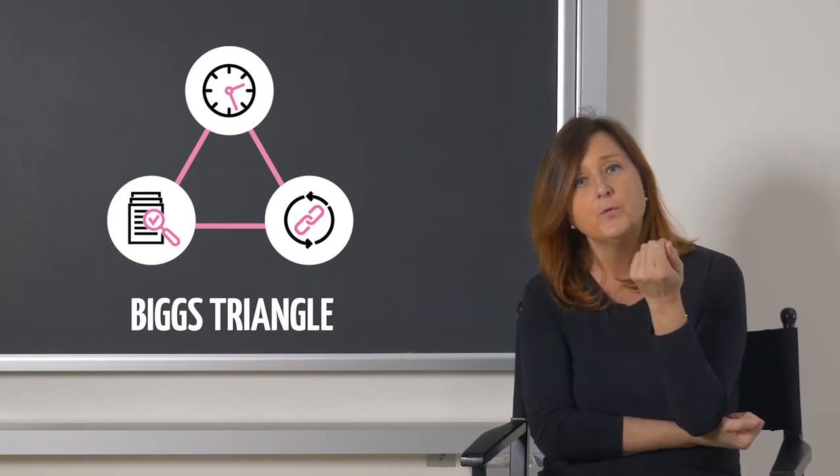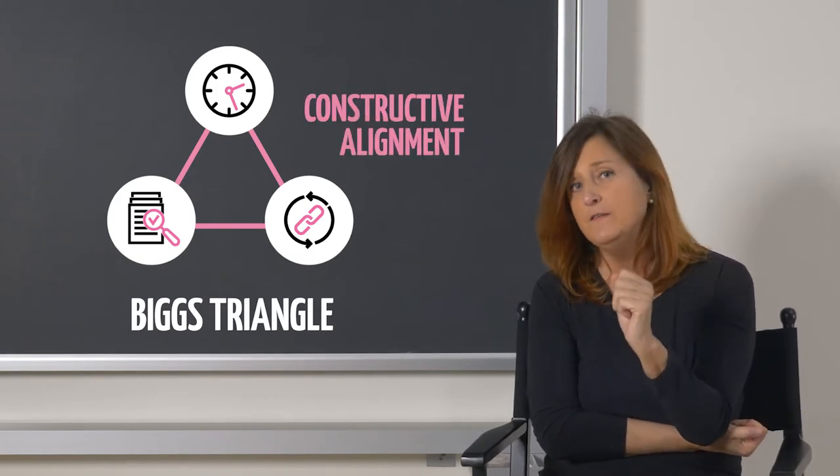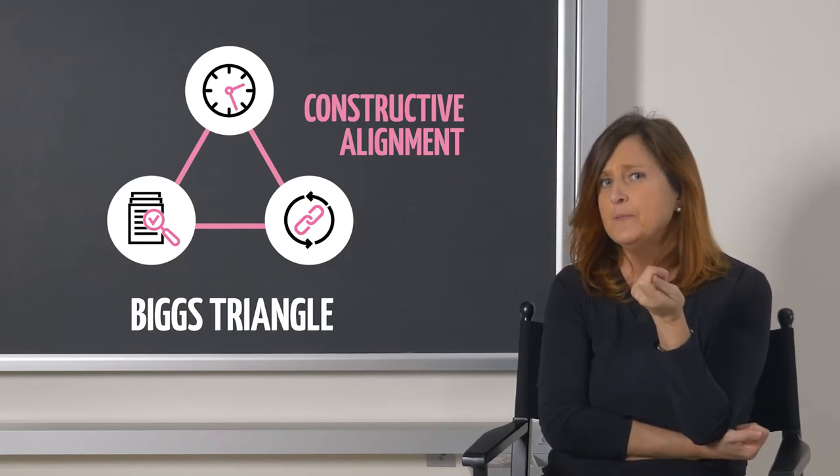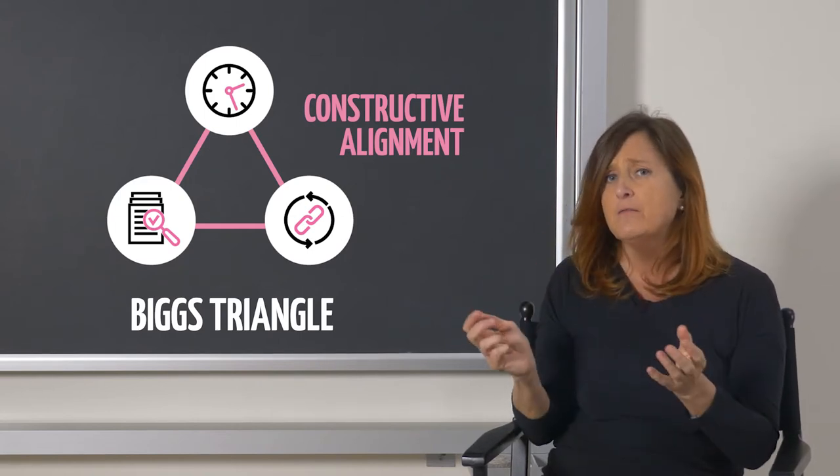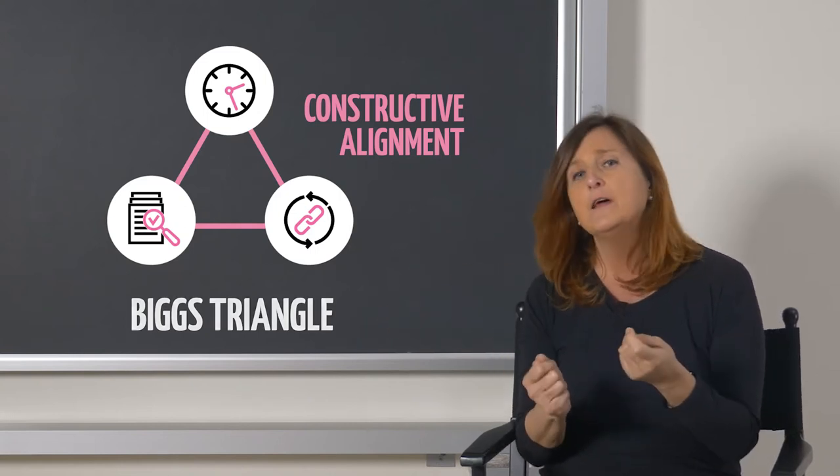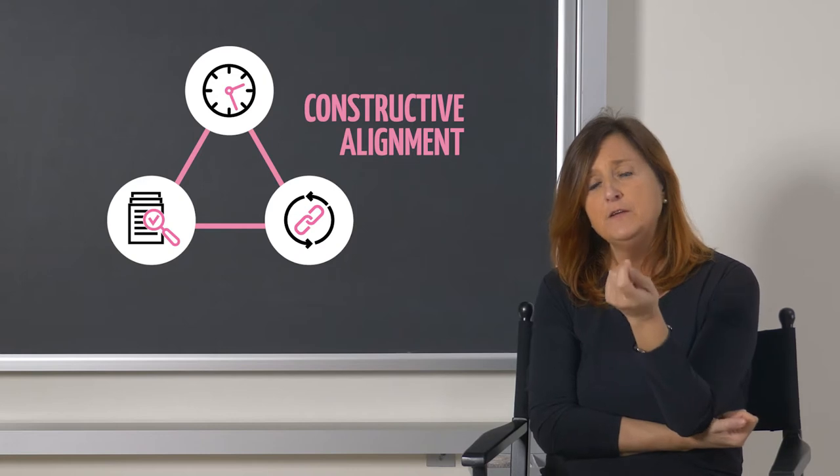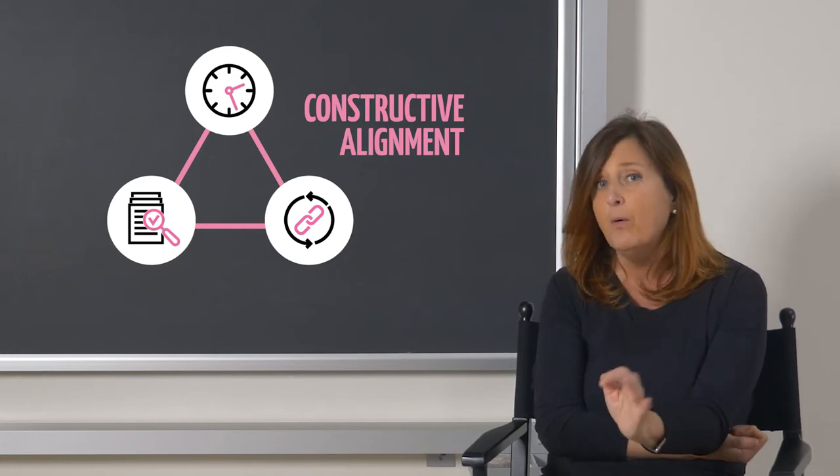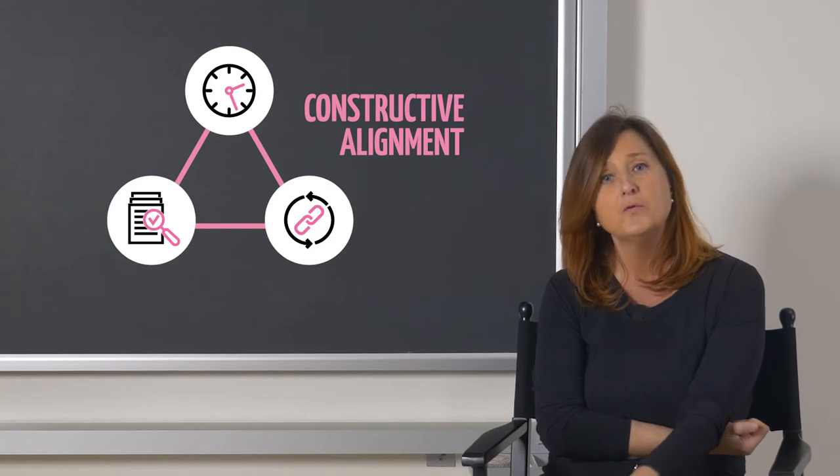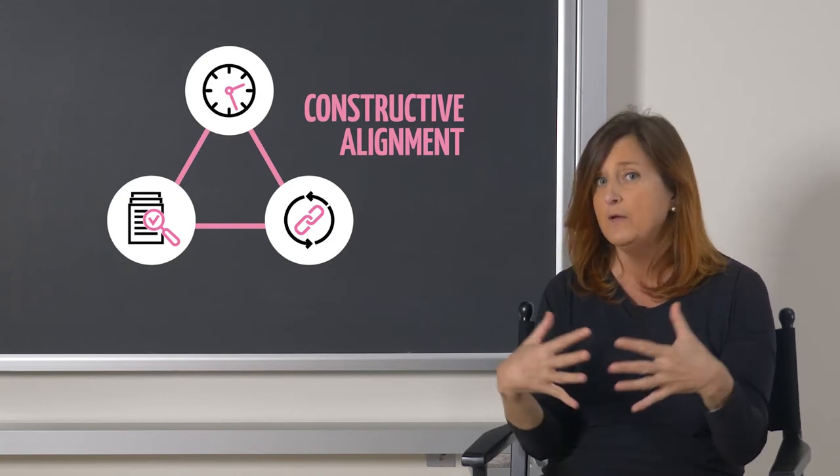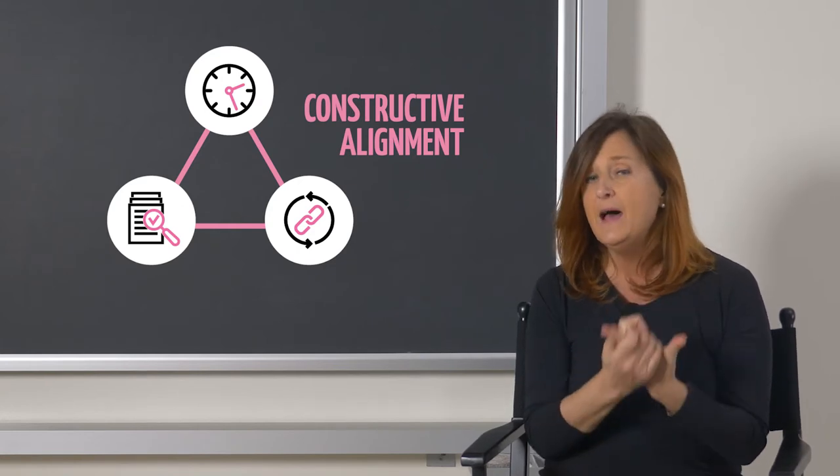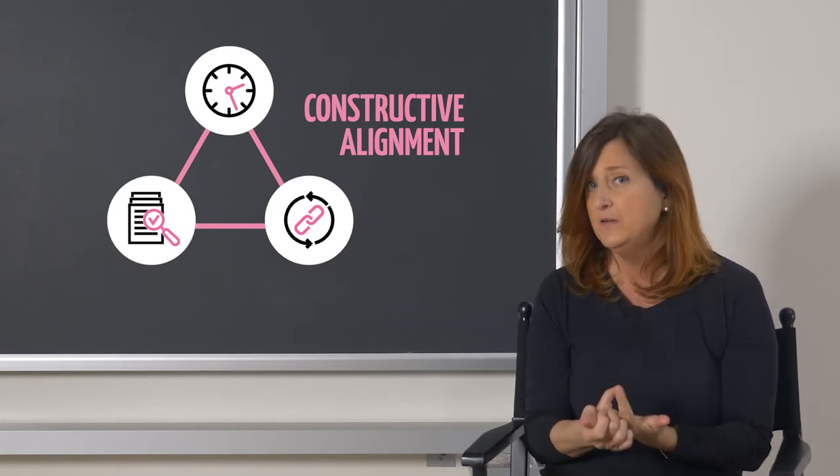Biggs defined this process as constructive alignment. What did he mean by alignment? This is already clear looking at the triangle in this diagram, in the sense that the prerequisite of effective teaching is being able to design a consistent alignment among these three elements that are interconnected to each other: intended learning outcomes, assessment strategies, and activities.